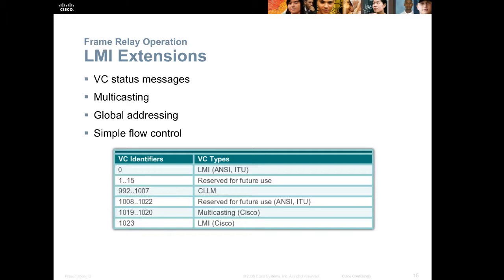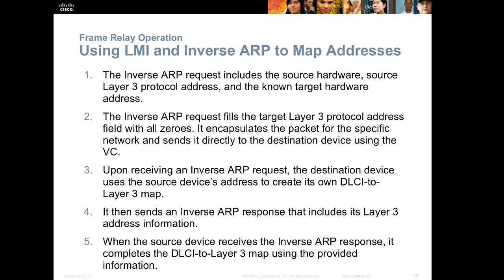LMI extensions: LMI can handle virtual circuit status messages, multicasting, global addressing, and simple flow control. LMI can use inverse ARP to map addresses. What happens is LMI can tell you all the DLCIs that your circuit has been pre-configured for, and then your router can send an ARP request to each of those and request the IP address associated with those DLCIs. In this way, Frame Relay can automatically configure itself for remote destinations.